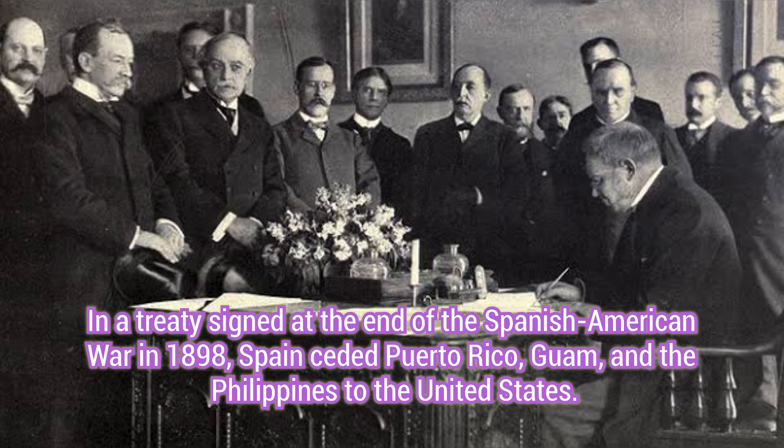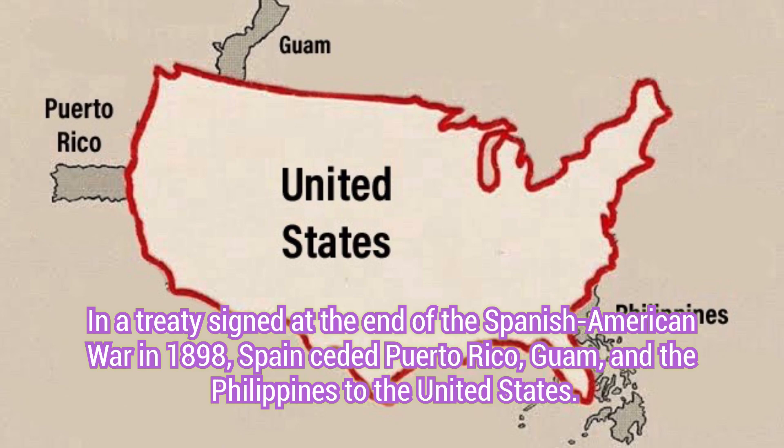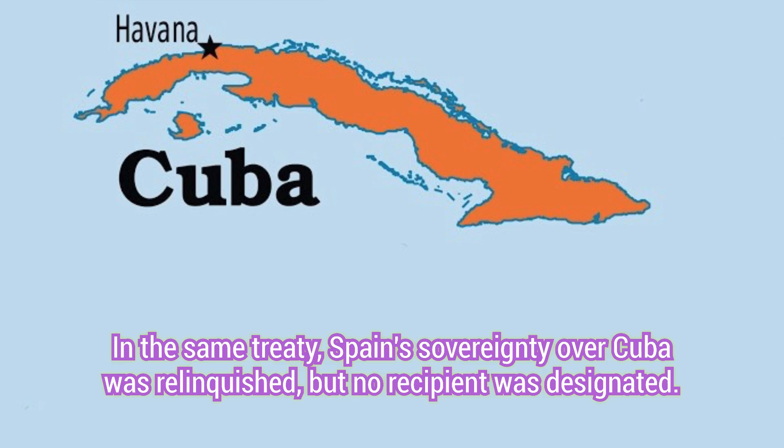Insular Areas Acquired by Conquest. In a treaty signed at the end of the Spanish-American War in 1898, Spain ceded Puerto Rico, Guam, and the Philippines to the United States. In the same treaty, Spain's sovereignty over Cuba was relinquished, but no recipient was designated.